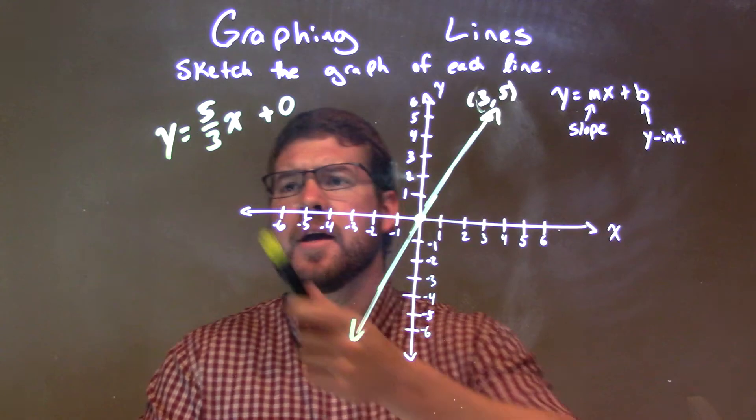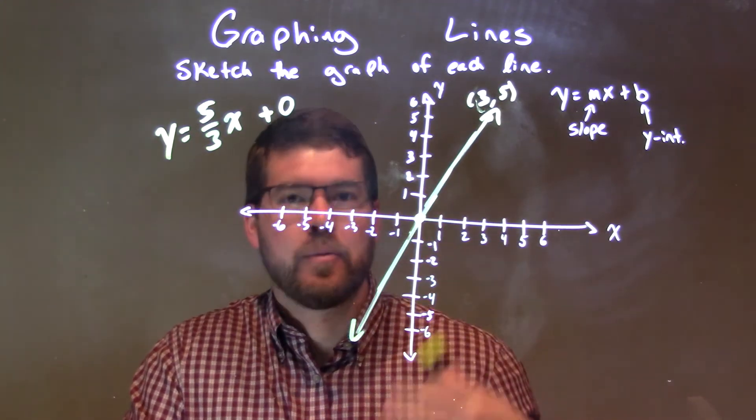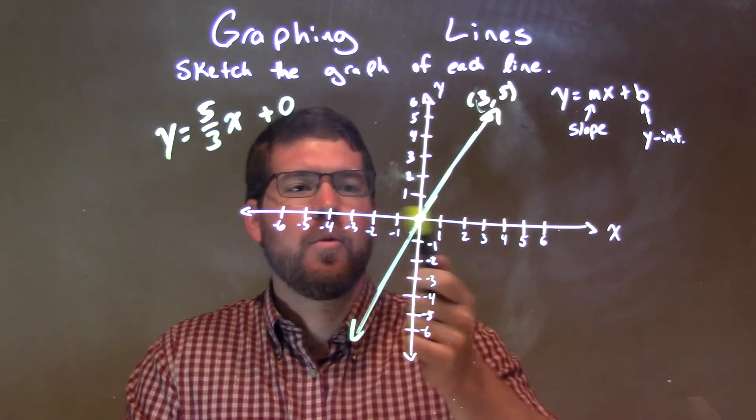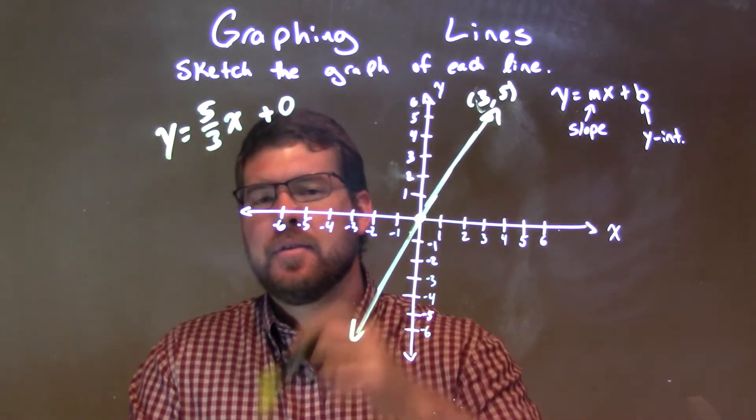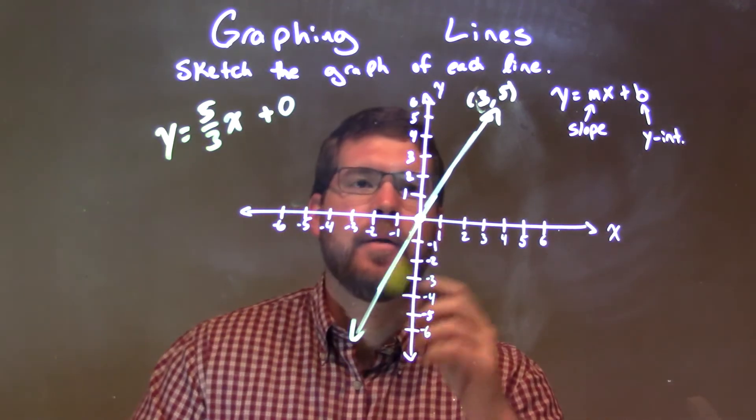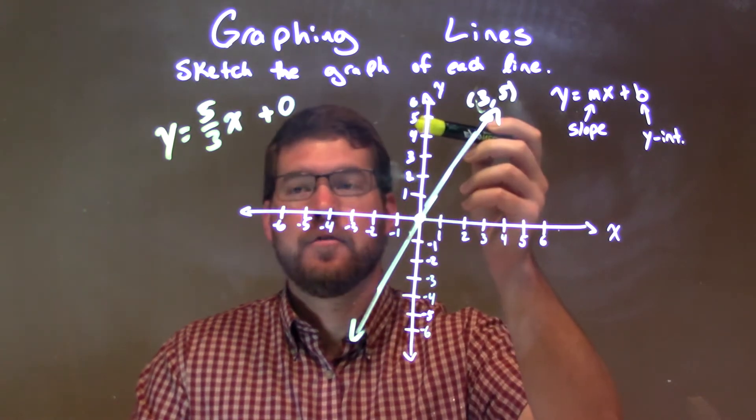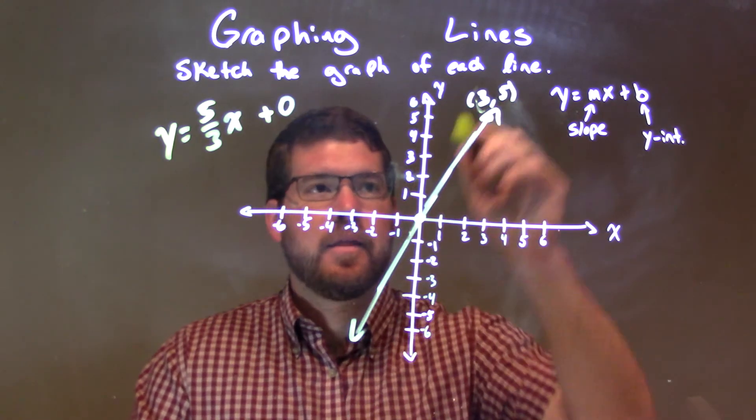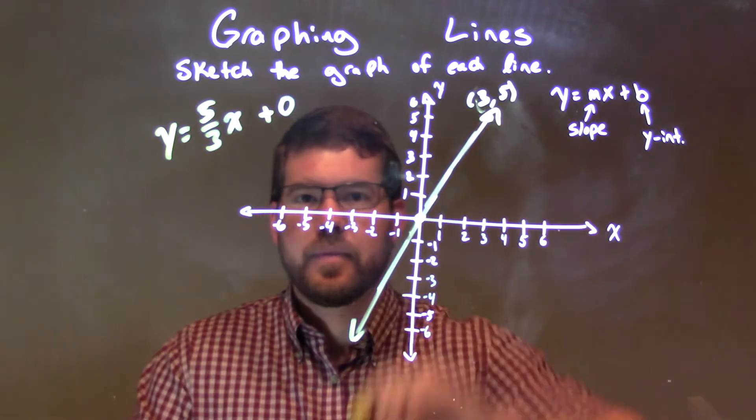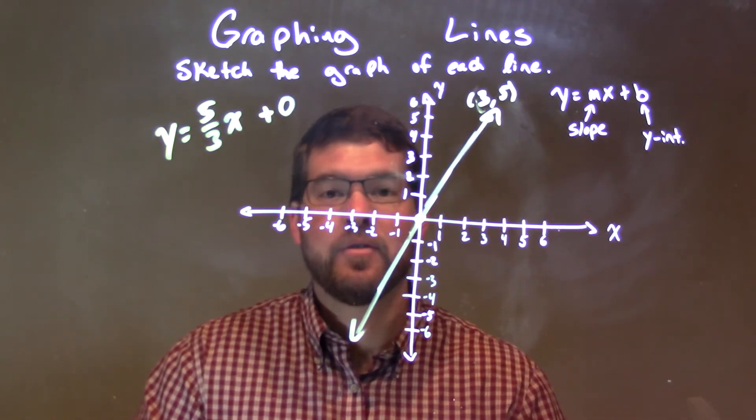So, a quick recap. We were given y equals 5 thirds x. I added the plus 0 just for what we're learning here - that 0 is our y-intercept. A lot of times you're going to recognize that, okay, 0 is the y-intercept. We're good. We put our point right there. Then we have a slope of 5 thirds. So we go up 5 units from 0 and over 3 units right there. Connect the two dots to make a line, and then we have our graph for our equation: y equals 5 thirds x.